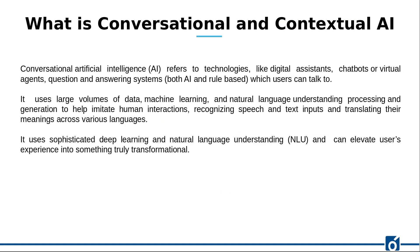So what exactly is conversational and contextual AI? Conversational artificial intelligence generally refers to technologies like digital assistants, chatbots, virtual assistants, and AI-based question and answering systems — which cover both AI-based and rules-based systems. Rules-based systems are where the conversation flow is fixed based on some conditions. This was used earlier, and some elements of rule-based are still used today.